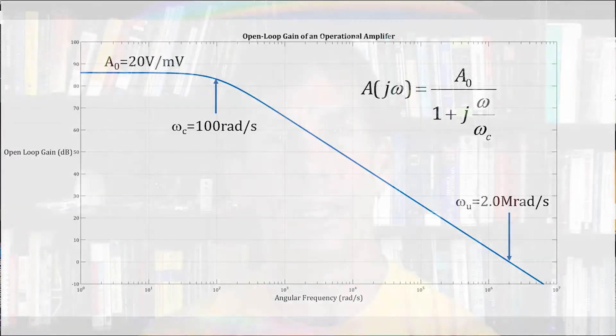Now, I am using the worst case parameters for the 741. The actual device performance will usually be a little better than this. Let us look at the numbers as they were given. Using 20 volts per millivolt as the open loop DC gain and 100 radians per second as the dominant corner frequency of the amplifier.